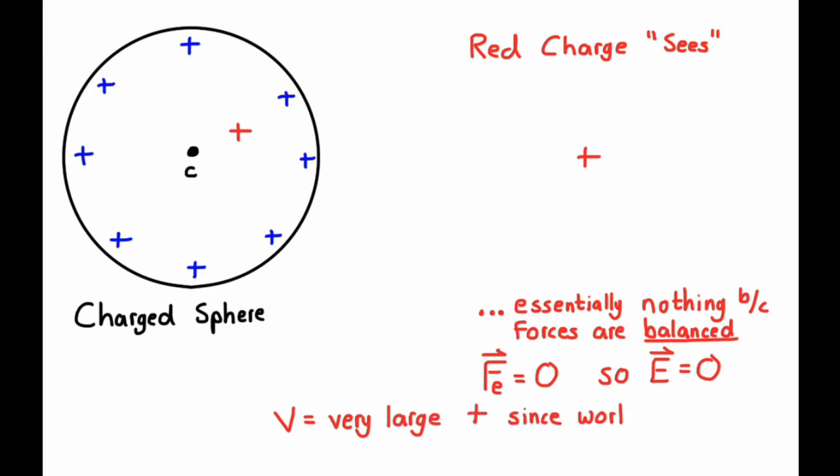The voltage, however, would be a very large positive value, since in order to get that red charge there from infinity, you would have to do a substantial amount of work in pushing it. And so, even though the charge is in equilibrium, and we've seen this a few times, that doesn't mean that it doesn't have any energy. And so, an analogy would be like a book on top of a bookshelf. The forces on the book would be balanced, but it would have energy, because it took work to put it there on top of the bookshelf. Same kind of thing with our positive red charge here.